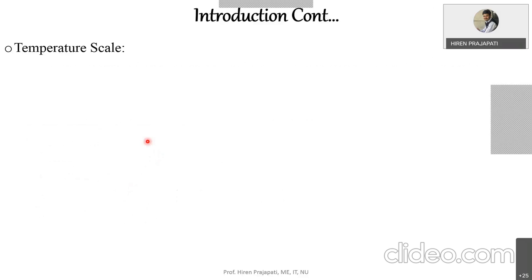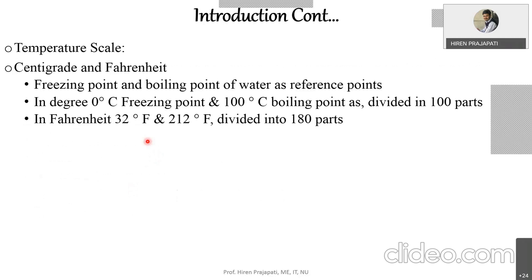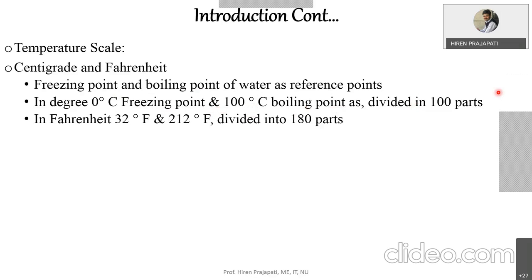Regarding temperature scales, we generally use centigrade and Fahrenheit. Temperature is a relative quantity, meaning we need to define a datum with respect to which we measure it. For scale formulation, we use two reference points: the freezing point and boiling point of water. Freezing point is 0 degrees Celsius and boiling point is 100 degrees Celsius, and the range 0 to 100 is divided into 100 equal parts, each giving 1 degree.